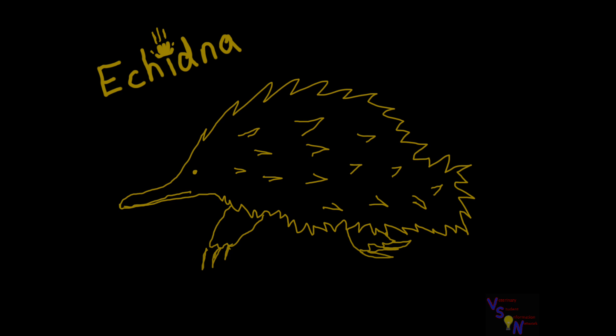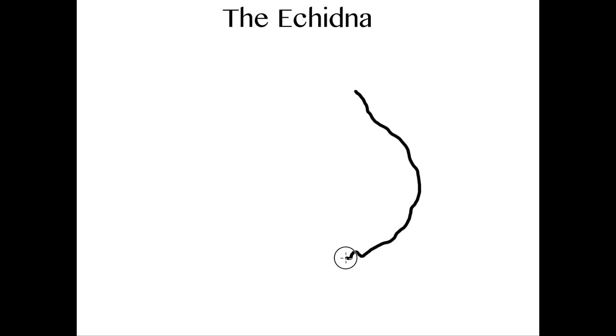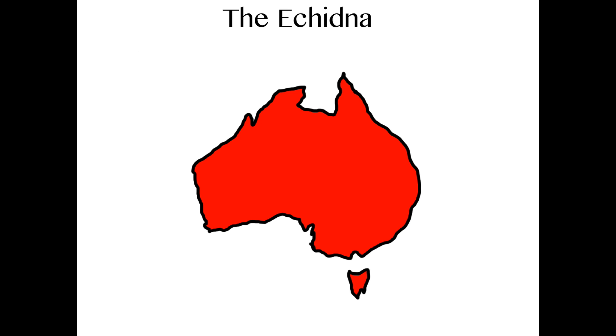Of the two remaining extant genera of the echidna, we have the Zaglossus in Papua New Guinea, which is a long-beaked echidna, and we have the Tachyglossus in Australia, which is the short-beaked echidna, widespread across Australia in a variety of environments, from desert to forest to urban.